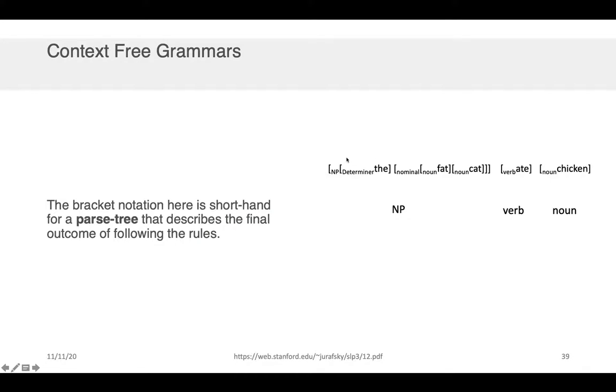Now the bracket notation that I've shown here is shorthand for what's called a parse tree that describes the final outcome of following the rules in our context-free grammar. So for example this first noun phrase that we generated together in the previous slide was a determiner as you see here followed by a nominal which you see here and furthermore the determiner was terminating in the which we show here and the nominal consisted of two nouns fat and cat which I show here